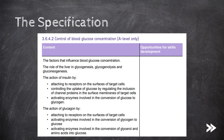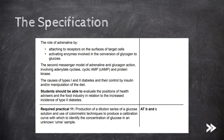That covers the control of blood glucose concentration. We've covered the factors that influence blood glucose concentration, the role of the liver in glycogenesis, glycogenolysis and gluconeogenesis, the action of insulin when blood glucose concentrations are too high, the action of glucagon and adrenaline when blood glucose concentrations are too low, the second messenger model, and the causes of type 1 and type 2 diabetes and how blood glucose concentration in sufferers can be controlled by insulin and/or manipulation of the diet.